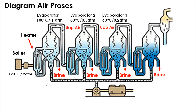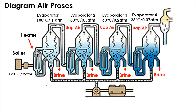Uap air dari evaporator ketiga dialirkan menuju ke evaporator keempat yang bekerja pada suhu 38 derajat celcius tekanan 0,07 atm. Dari evaporator 4, larutan garam yang dipanaskan kemudian akan mengalami pemekatan, menghasilkan seluri garam yang dialirkan ke bawah evaporator. Kemudian uap air akan dikondensasikan pada kondensor dan menghasilkan air yang nantinya akan dipergunakan kembali.